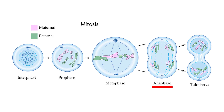Anaphase: in this stage, the centromeres split and sister chromatids — now individual chromosomes — are pulled to opposite poles of the cell by the spindle fibers. The cell elongates in preparation for division.